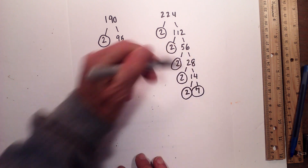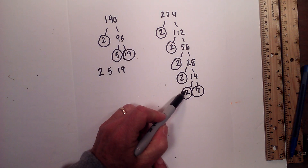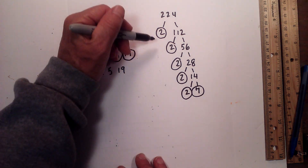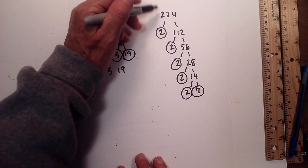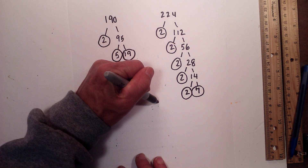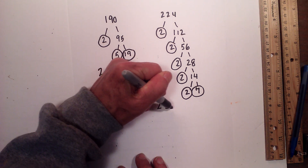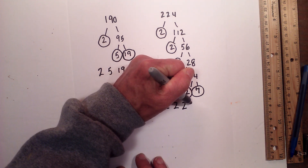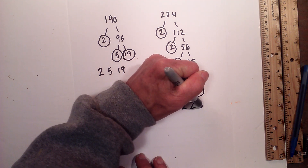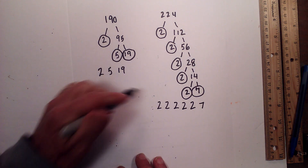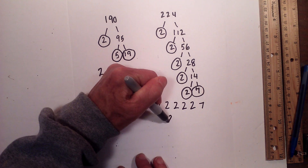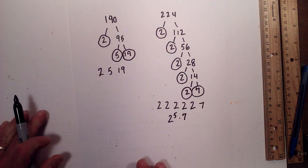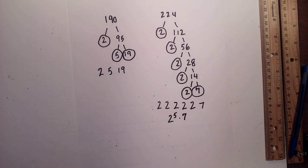Circle the 2 and the 7 because they are prime. I am now finished because I am down to just prime numbers. So the prime factors of 224 are 2 times 2 times 2 times 2 times 2 times 7, or 2 to the 5th times 7.